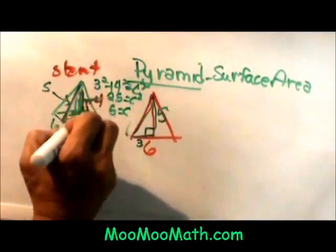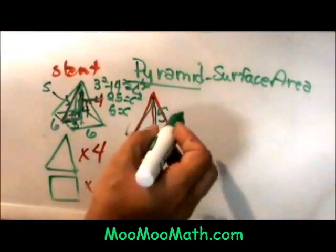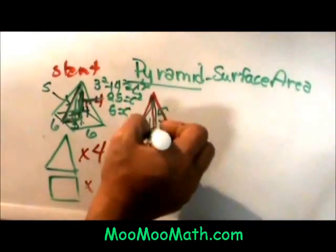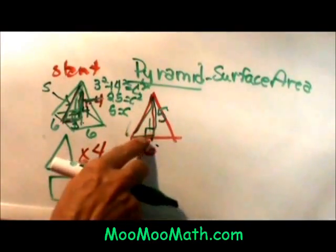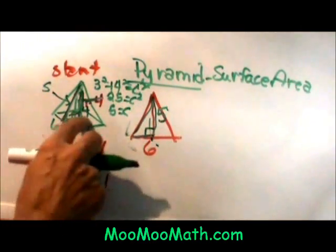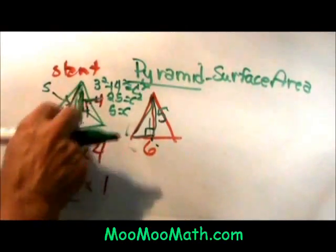But that was actually generated from the height inside the pyramid. So my height is five and that is the slant height. Okay I no longer need the three over here because I have used it to find the slant height.